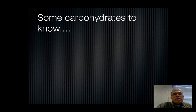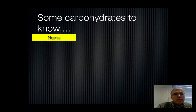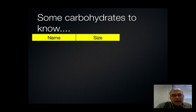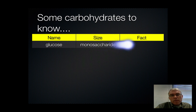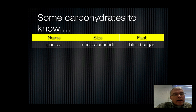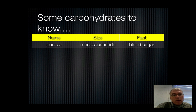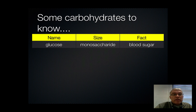Now some carbohydrates that you need to know — I want you to know the name, how big they are, and one or two facts about each one. Glucose is a monosaccharide, our smallest sugar. It's the sugar that floats around in your bloodstream and has to be regulated as part of homeostasis, or you can get very sick. People who have problems regulating their glucose because of an insulin issue are called diabetics. Fructose is another monosaccharide found in fruits, sometimes called fruit sugar.